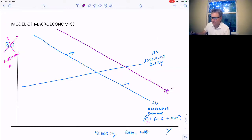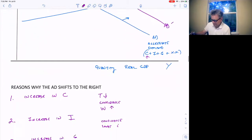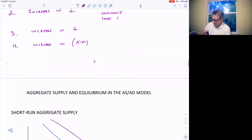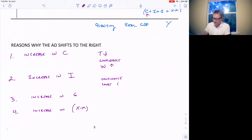So what would make it shift to the left? Exactly the opposite. A decrease in consumption. A decrease in investment. A decrease in government spending. A decrease in exports minus imports. And what would make that happen? Confidence in the economy falling. Increase in taxes. Decrease in wealth.